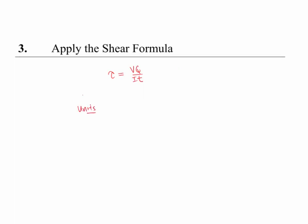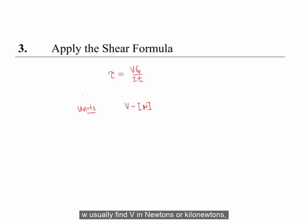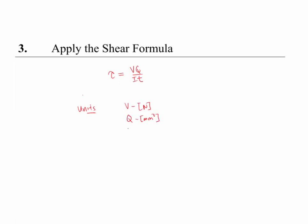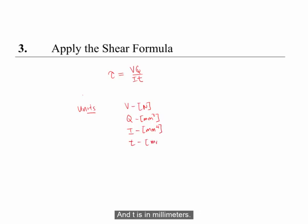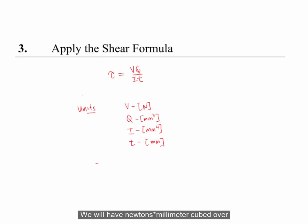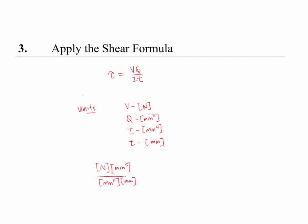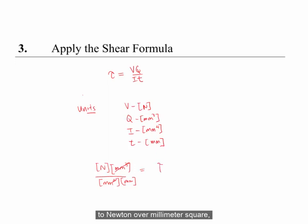Units wise, you usually find V in newtons or kilonewtons, Q in millimeters cubed, I in millimeters to the four, and t in millimeters. So if we substitute into our equation for tau, we have newtons times millimeters cubed over millimeters to the four times millimeters, which simplifies to newtons over millimeters squared, which we know as MPa.